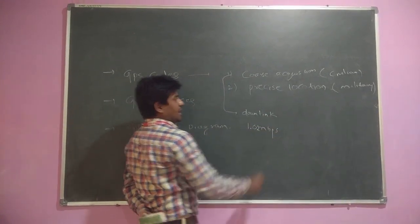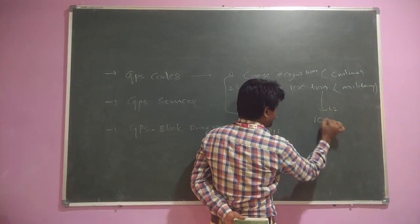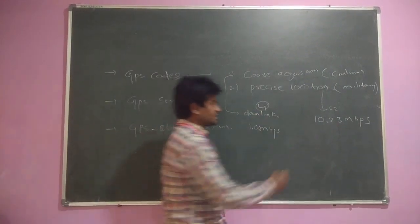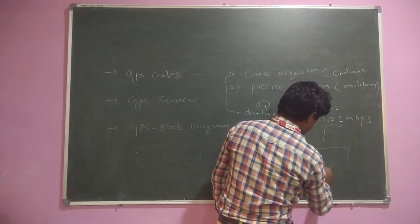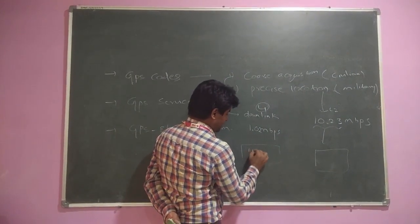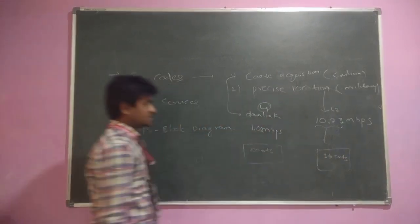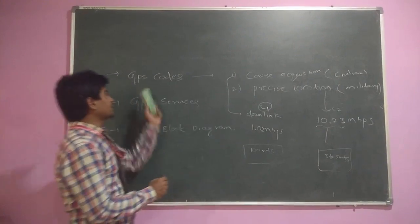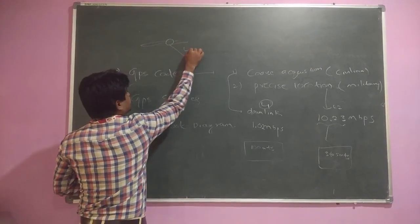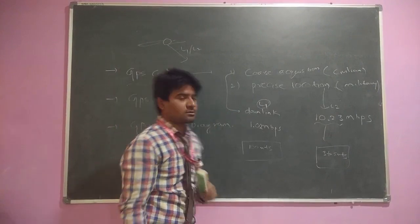Precise Location downlinks the signal at 10.23 Mbps. Because Precise Location uses more bandwidth, the location accuracy is very precise — up to 3 to 5 meters — whereas Coarse Acquisition at 1.023 Mbps gives accuracy up to 100 meters. The satellite sends two types of signals: L1 is downlinked for Coarse Acquisition GPS receivers, and L2 is downlinked for Precise Location.